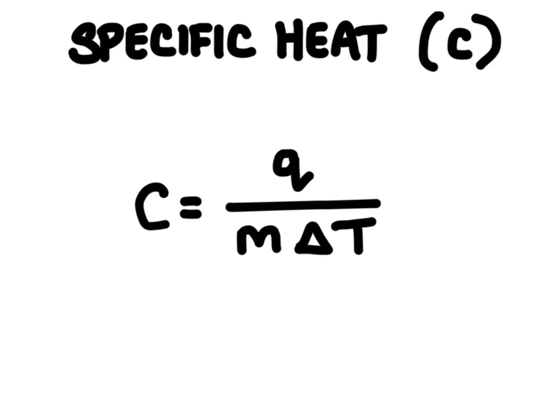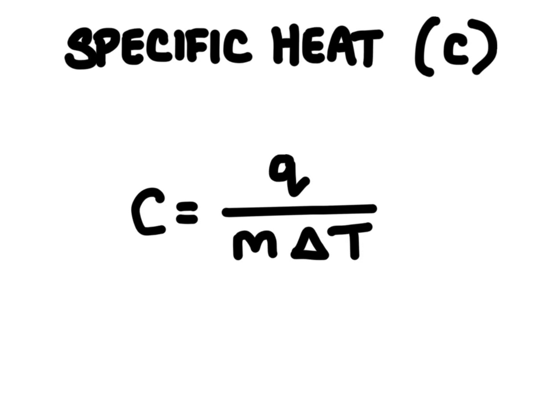And here is the equation we use to calculate specific heat. We use the symbol C, capital C, to represent specific heat. And we take the heat represented by this lowercase q divided by the mass of the substance times this change in temperature. This symbol right here, delta, means change in and the T is representing temperature.